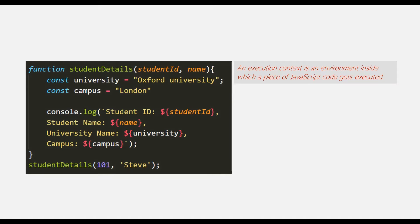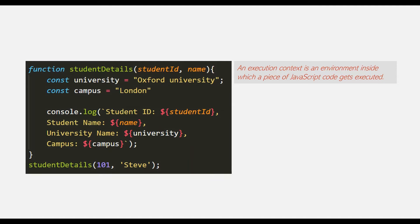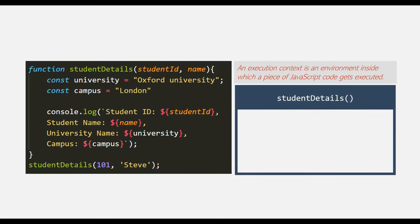Let's understand this with a very simple example. Here we have a very simple StudentDetails function. When this function is called, a box will be created inside the call stack. Inside this box, all the variables, arguments, and other information related to this function will be stored. Then the logic of this function will be executed inside this box. For example, this StudentDetails function is taking two parameters.